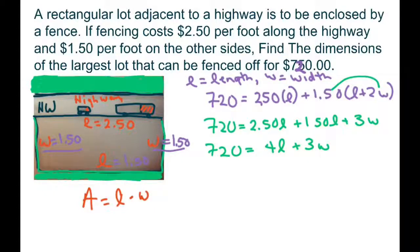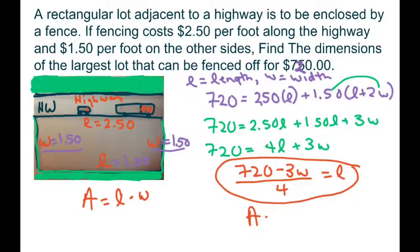If you solve for length, we get 720 minus 3W, and then you divide by 4. That gives you your length. It's because we're going to use substitution. Now we have a system of equations, and we're going to substitute our length inside there.